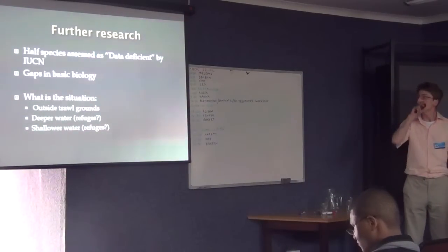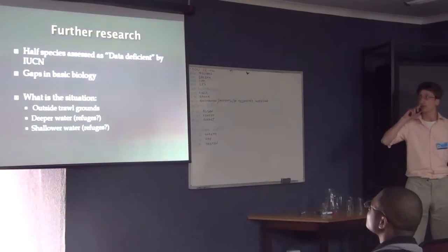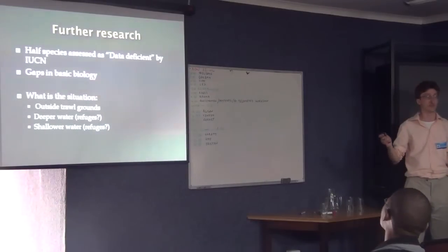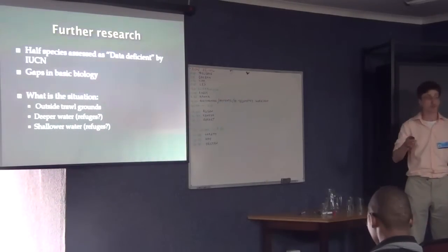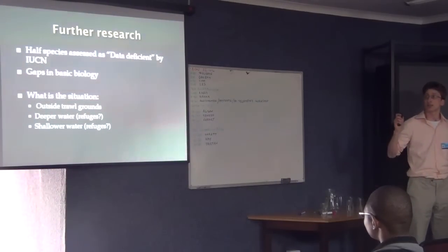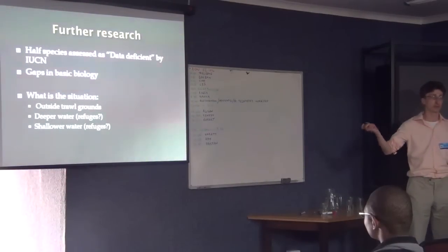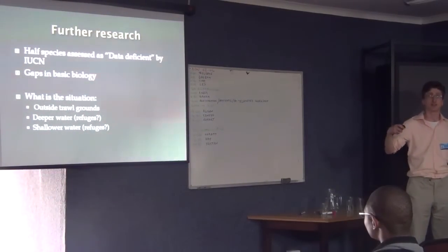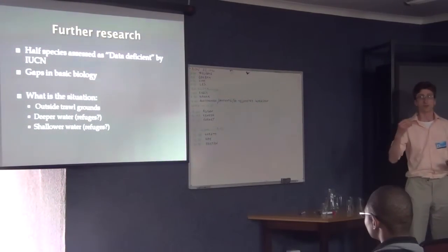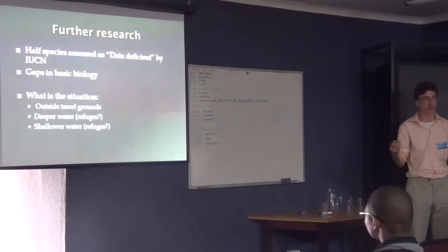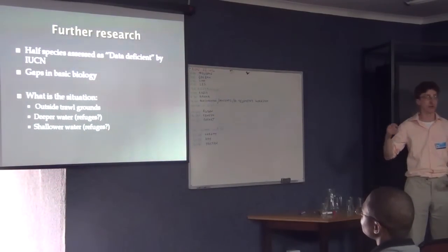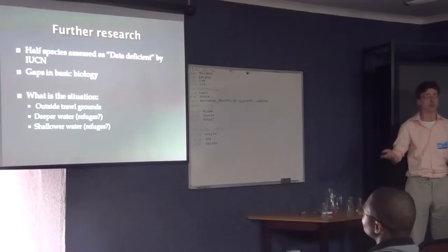There is still further research to do. Forty-eight percent of the species I had in my database would be listed by the IUCN as data deficient, and as far as I can tell, there's just basically gaps in the biology. But on top of that, I can only say that these trends hold true on the trawl grounds, specifically in the areas analyzed. Perhaps it would be worthwhile to look outside the trawl grounds, maybe where the line fishermen operate, maybe look at deeper water or shallower water, if there are refuges there where these trends may not be true.